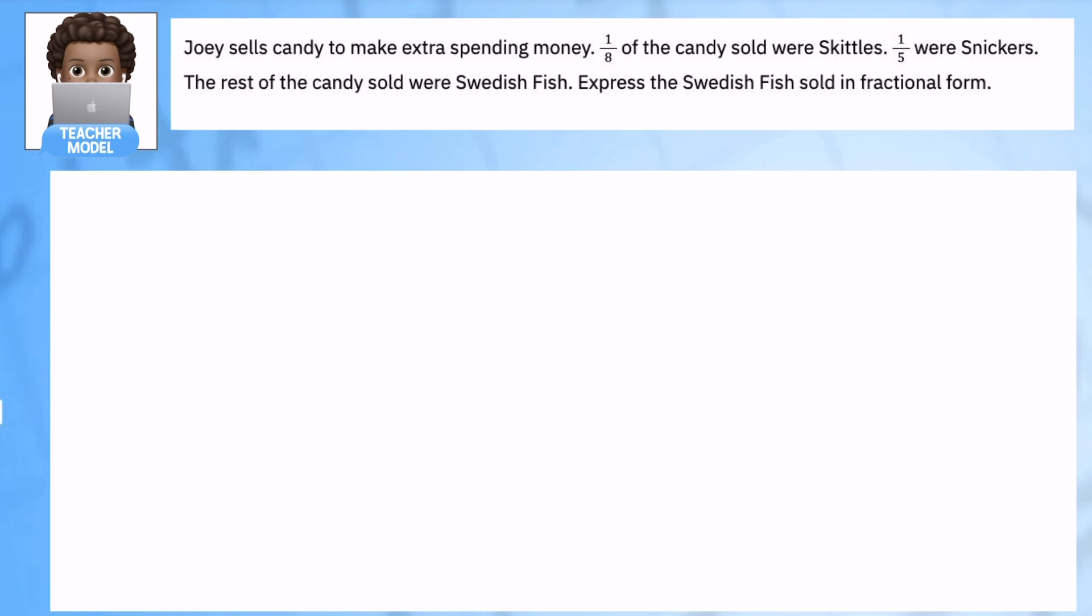Joey sells candy to make extra spending money. One eighth of the candy were Skittles, one fifth were Snickers. The rest of the candy were Swedish Fish. Express the Swedish Fish in fractional form. So this is a very similar problem like the last one.